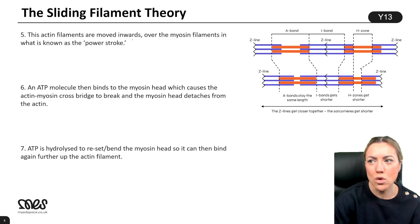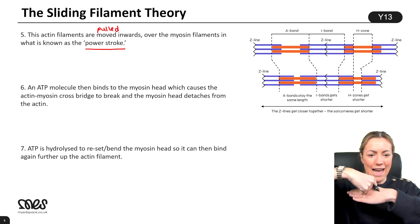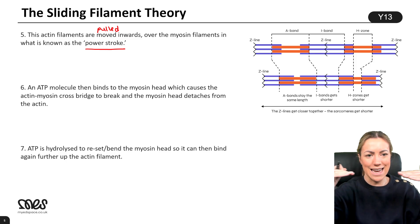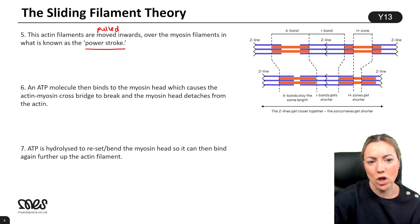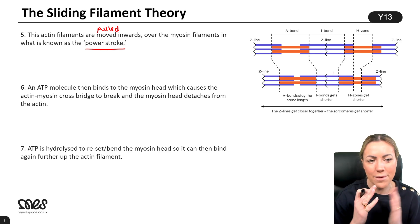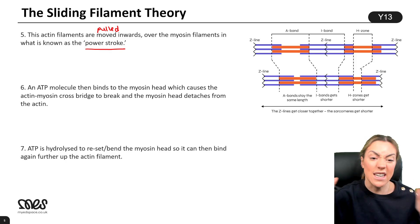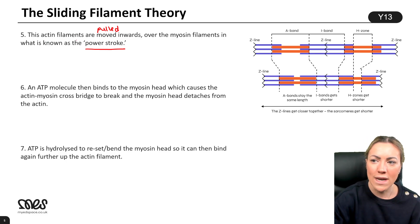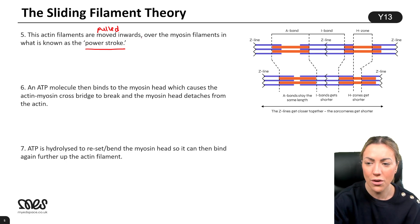The actin filaments are pulled inwards over the myosin filaments in what is known as the power stroke. The myosin head attaches to the actin and moves the actin filaments inwards over the myosin filaments. You can see this on the diagram: in relaxed sarcomeres the Z-lines are apart, and in contracted sarcomeres they move closer together — the I-bands and H-zone get shorter, but the A-band stays the same length because the myosin filament length does not change.